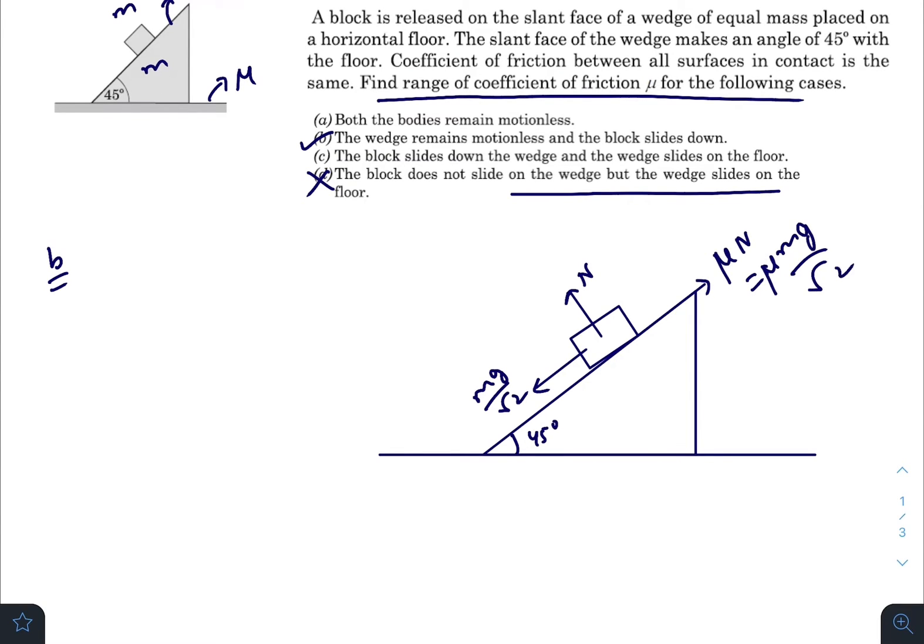There is an acceleration of the block, so for nonzero acceleration, mg/√2 must be greater than μ mg/√2. So μ must be less than 1. We have got the upper limit for the coefficient of friction.